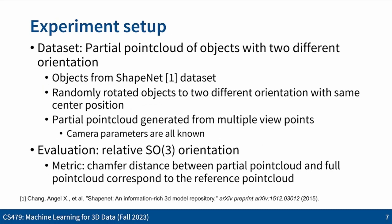We generate our dataset using ShapeNet. We sample objects, apply two random SO(3) rotations, and sample a partial point cloud by merging point clouds generated from multiple viewpoints. We randomize camera pose and number of cameras to make the model robust to viewpoint changes and occlusion in real-world use. We use chamfer distance between partial and full point clouds as a loss function. Our model predicts the object pose, and we measure chamfer distance between ground truth and rotated point clouds based on model prediction, which avoids ambiguity from symmetric objects. Thank you for listening.